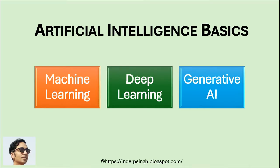At its core, AI is about systems that can perform tasks that typically require human intelligence. This includes everything from playing chess to recognizing faces in photos to driving cars. So when we talk about AI, we are talking about a wide range of technologies that simulate human intelligence.